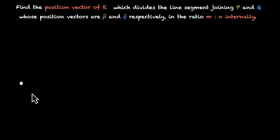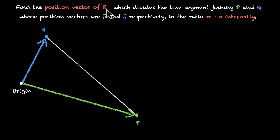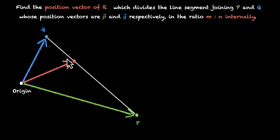We have the origin o and we have these two vectors p and q. So this point is p, this point is q. These vectors are the position vectors of p and q. This line segment pq is the one divided by r in the ratio m is to n internally. Because it's an internal division, r sits on pq. This is the position vector of r, which is what we need to find.